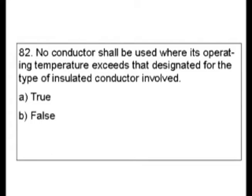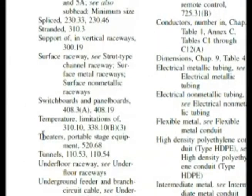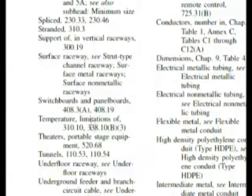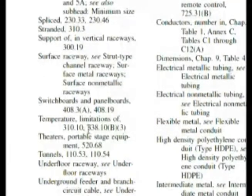Let's find the exact answer in the codebook. The keyword we would look for here would be conductors, but let's see if we can find something about temperatures and conductors. Under conductors and the subheading we find temperature limitations. We're given the choice 310.10 and 338.10b3. I've said before if I have this detail I'd like to go there and see if I get lucky. In this case, let's choose 310.10.